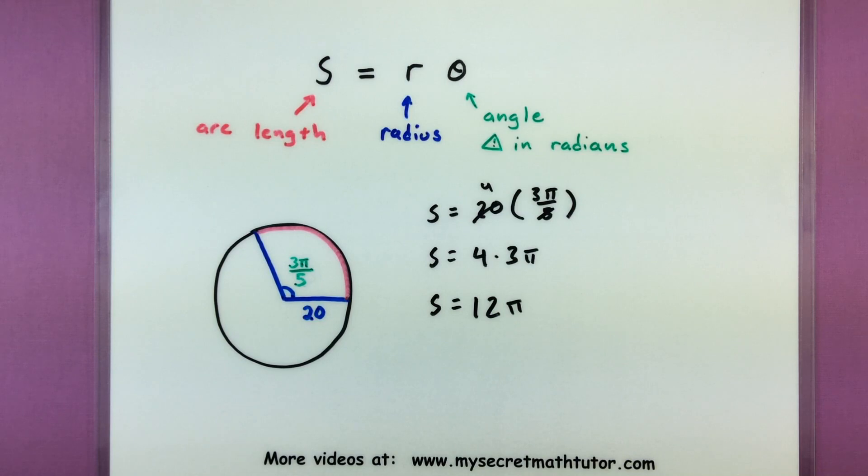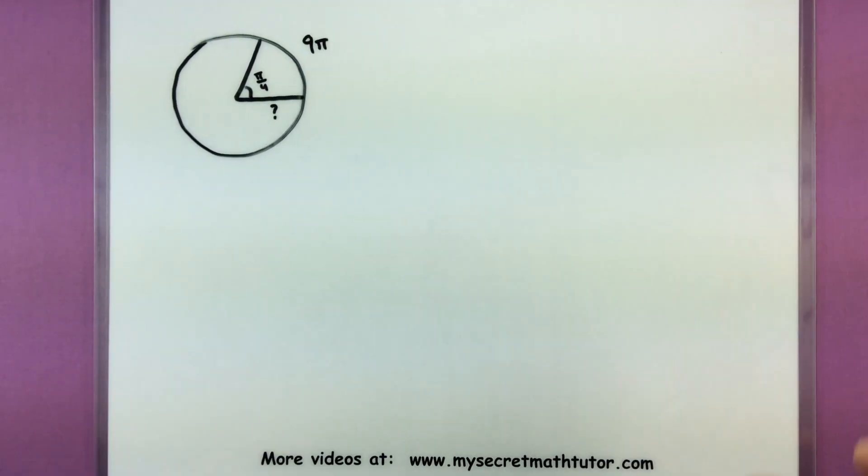We can play around with this problem since it's a connection among all three things. As long as we have two of them, we can always find the other one.